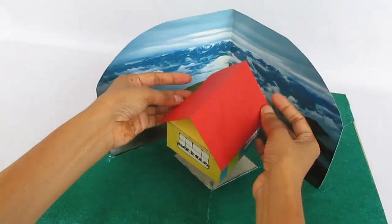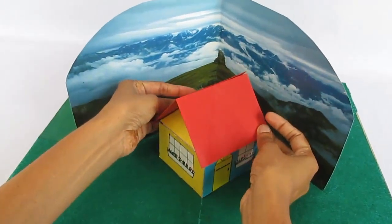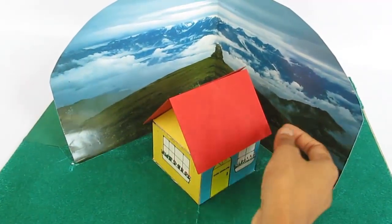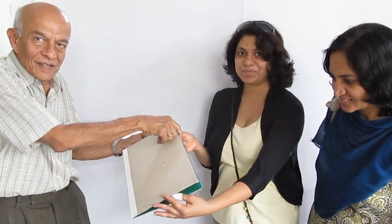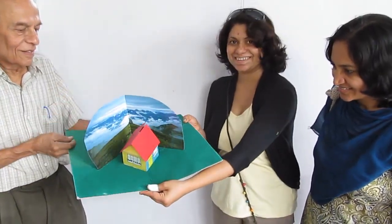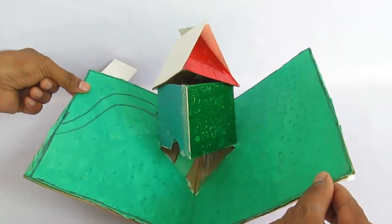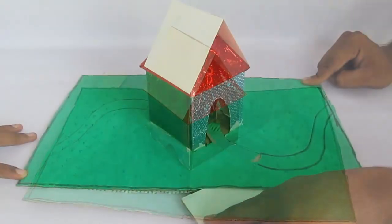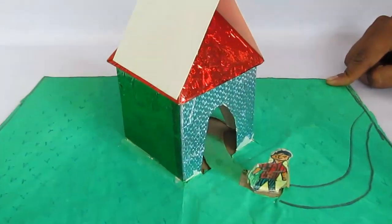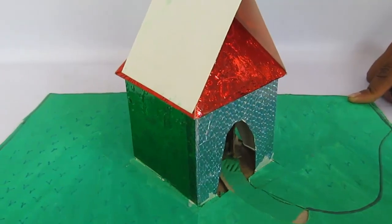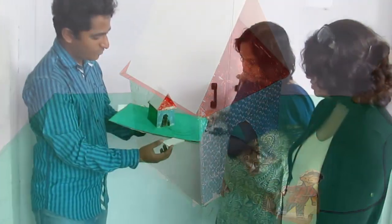You can also have some sort of a background of the house, some hills which can act like a backdrop. And here you can see the complete 3D pop-up house. You can fold it and open to bring it back up.